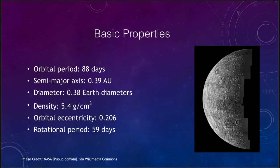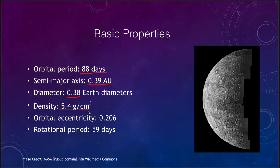Some of the basic properties to start off with: its orbital period is 88 days, meaning it takes about three months to orbit around the Sun once. Its semi-major axis, or average distance from the Sun, is about 0.4 astronomical units — less than half the distance of the Earth from the Sun. Its diameter is a little more than a third of the Earth's diameter. Its density, however, is very similar to the Earth's.